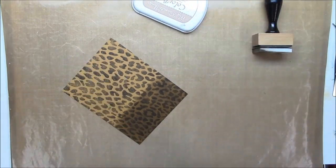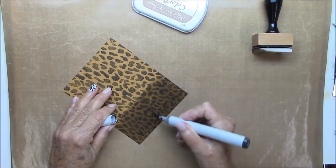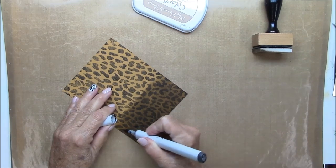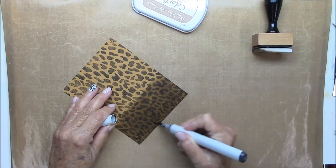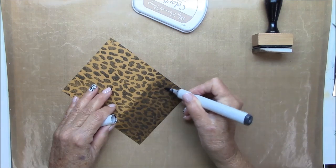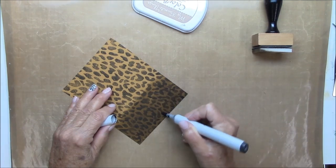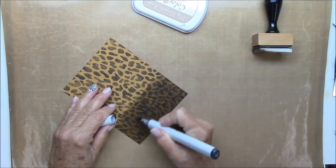Now that I've finished sponging I'm going to take my copic marker, it's a dark gray, and just add some more dots and dashes. Just randomly filling in some of the larger openings between the cheetah spots.